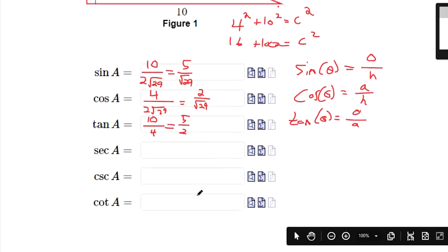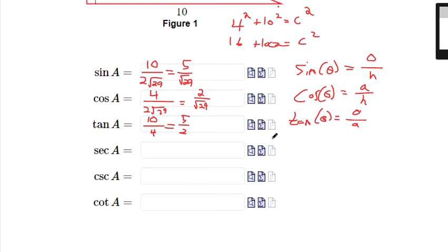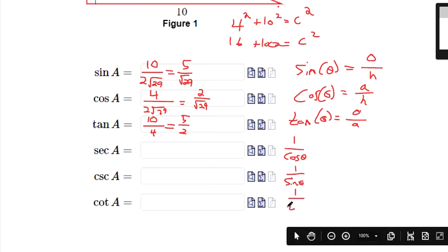Now look, secant, cosecant, cotangent are a lot easier once you have the first 3, once you have sine, cosine, tangent. Because secant is 1 over cosine. Cosecant is 1 over sine. Cotangent is 1 over tangent. So they're basically the flips, the flipped version of these fractions that we have up here.